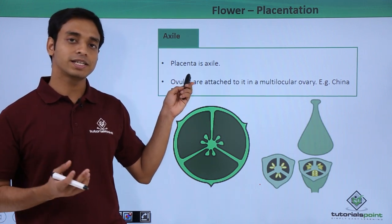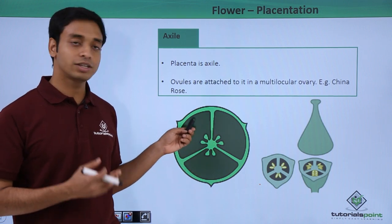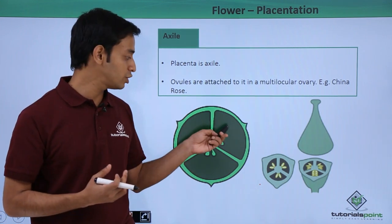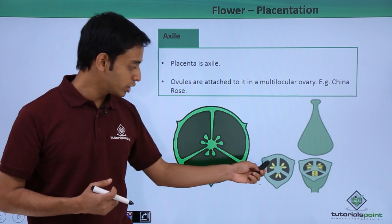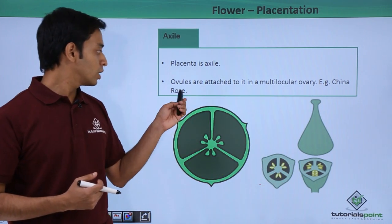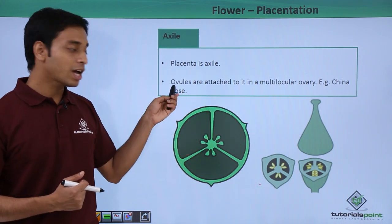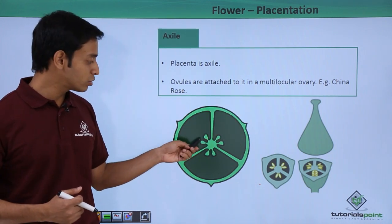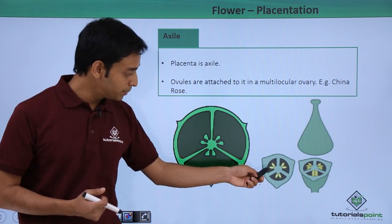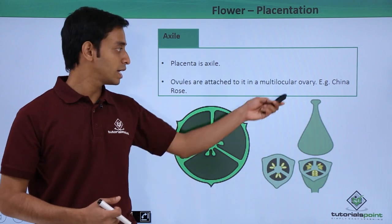The second type is known as axile placentation. Here, the ovary is divided into different locules or chambers, as you can see. The ovules are attached to the inner part of these chambers. This type is typically seen in china rose.